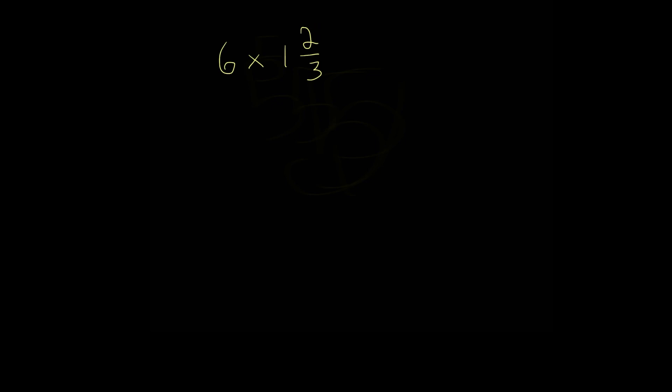And whenever we're multiplying anything with a mixed number, our first step is to always convert our mixed number into an improper fraction. And what an improper fraction is, is it's a fraction with its numerator being greater than a denominator.